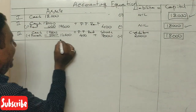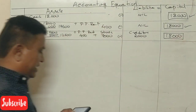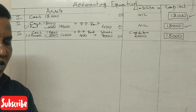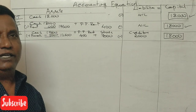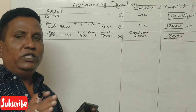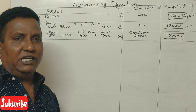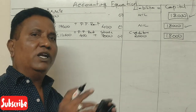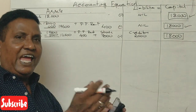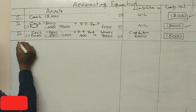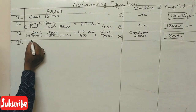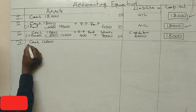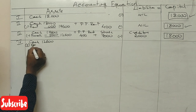Fourth transaction: sold goods for cash ₹4,000, costing ₹2,400. Goods worth ₹2,400 are sold for ₹4,000 cash. Cash increases and stock decreases. Cash: ₹12,600 plus ₹4,000 = ₹16,600.